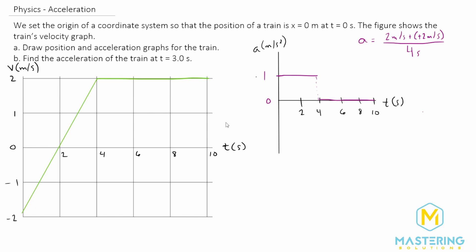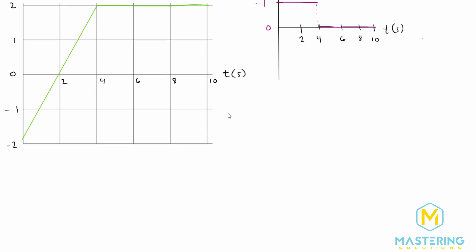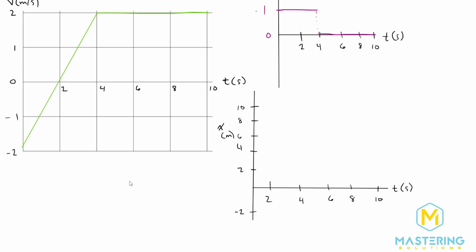I did the acceleration graph first because the position versus time graph is a little more involved. I've drawn our position versus time graph here. When we have a velocity versus time graph, to find the displacement we find the area underneath the curve. For zero to two seconds we have a triangle. At two seconds: one half times the base of two seconds times the height of negative two meters per second. Negative two times two is negative four, multiplied by one half is negative two meters. So from zero we come down to negative two meters at two seconds.